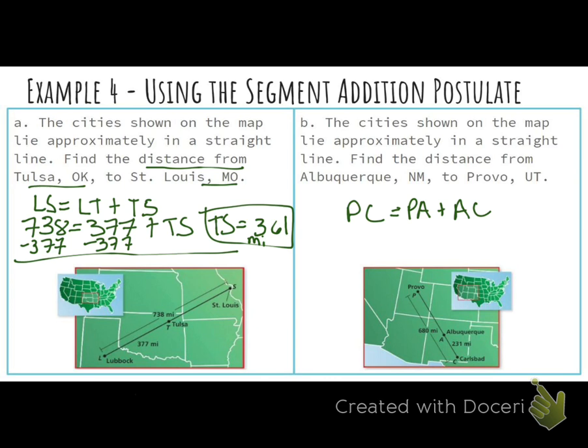Who would like to tell us what we know? We know the Provo to Carlsbad mileage is 680. And then from Albuquerque to Carlsbad is 231. So we have the PA here is what we don't know. So I wanted to make sure that I brought that down. And now I have to look for what that distance from Provo to Albuquerque. So we need to do some subtraction again. We're going to subtract that 231. What do we get here? 449. I'm going to verify that that's what I got. Yep. And again, miles. Excellent work, guys.